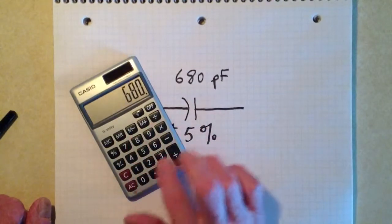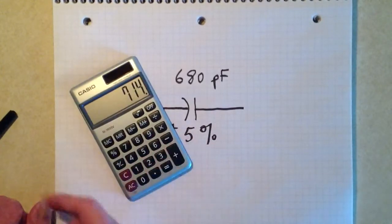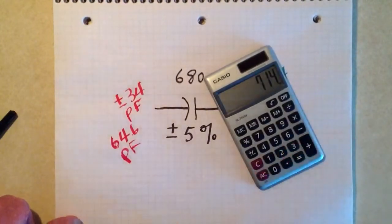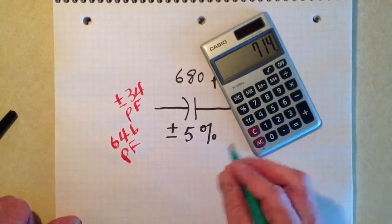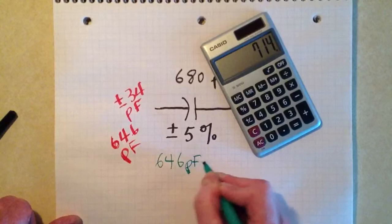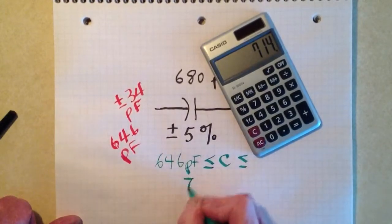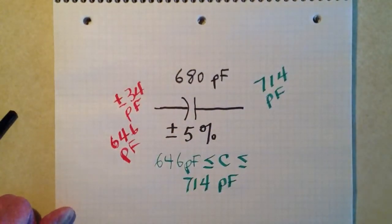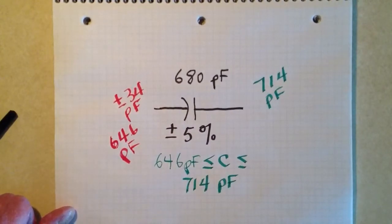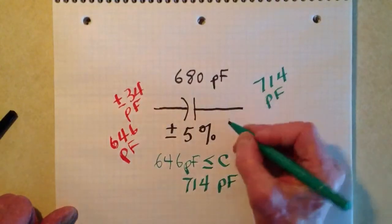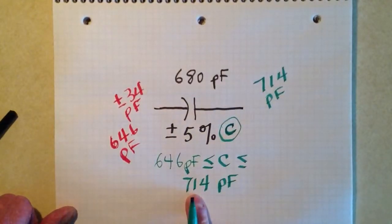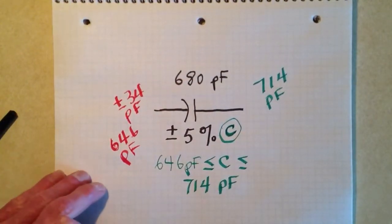680 minus 34 and 680 plus 34 equals 714 pF. So we should reasonably expect then that this capacitor will have a value between 646 and 714 pF. Unfortunately, it's not so easy to measure capacitance the way that it is easy to measure resistance. So we have to pretty much take this at face value. 646 is less than C, which is the actual value of the capacitor, not the rated value, but the actual value. That's what 680 plus or minus 5% means.